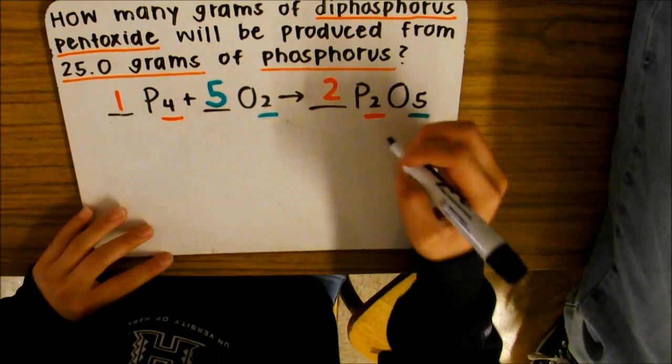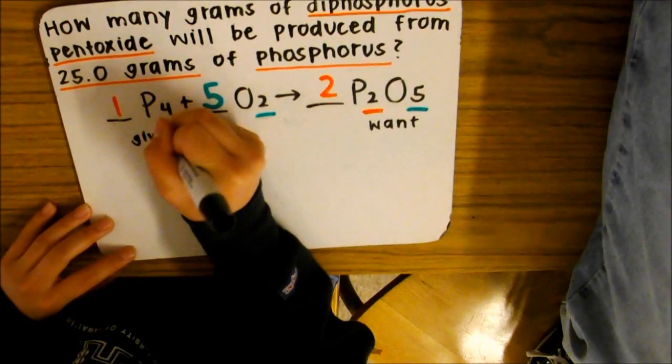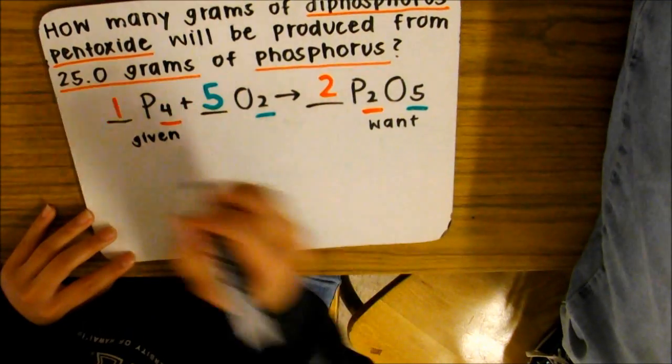Now we're going to find out what we want. What we want is diphosphorus pentoxide, and what is given is 25 grams of phosphorus. So we're going to write that out.